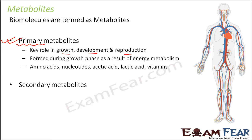Some examples of primary metabolites are amino acids, nucleotides, acetic acid, lactic acid, and vitamins. You need all of them for growth, reproduction, and development. These terms might be new to you for now — like amino acids or nucleotides — but you will get to know about them as we go ahead with the lesson.